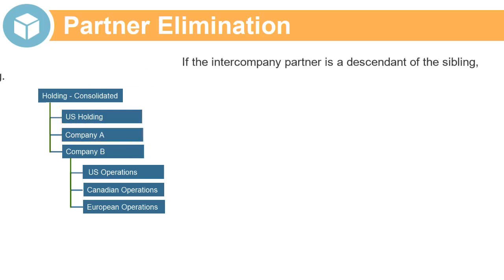Note that if the intercompany partner is a descendant of a sibling, rather than a sibling itself, the data is written to the sibling, not to the descendant.